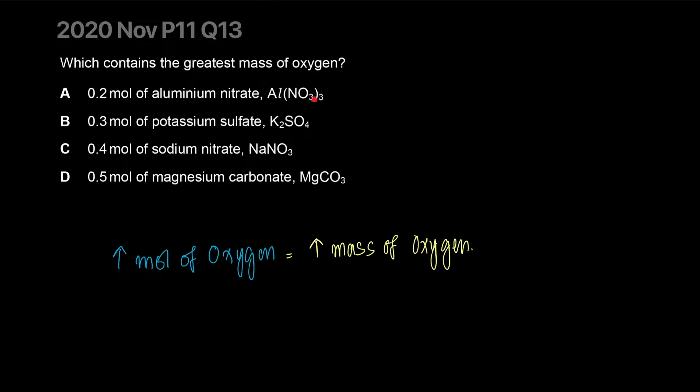Over here you have three in every nitrate and you have three nitrate per aluminum, so the total count of oxygen - let's do counts of oxygen first. There are nine over here, four over here, three over here, and three over here. And each is being multiplied by the moles they have. 0.2, 0.3, 0.4, and 0.5. 0.5 times 3 is 1.5, so that's out.